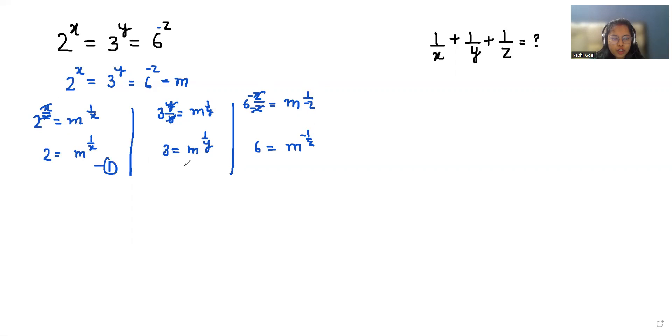Now I'm considering it as equation number 1, this as equation number 2 and this as equation number 3. Now I'm going to multiply equation 1 and equation 2. So 2 times 3 = n^(1/x) times n^(1/y). So 2 times 3 is 6 equals, according to exponent rule x^n times x^m can be written as x^(n+m), n^(1/x + 1/y).